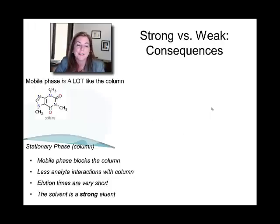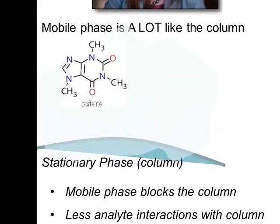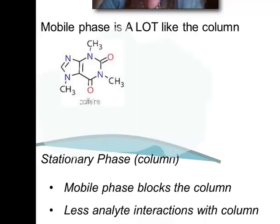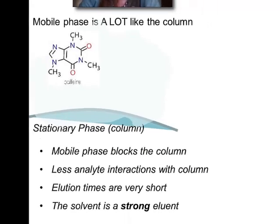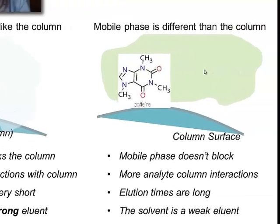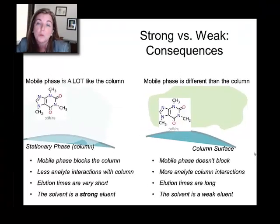Over here on the left is a case where the mobile phase is a lot like the column. So if you have a nonpolar column, that might mean acetonitrile — something really nonpolar. That caffeine molecule really has a bunch of this mobile phase in the way, and it's not going to see the stationary phase. There's less analyte interaction with the column and short elution times. This is an example of a strong eluent — it's highly interactive with the column and blocks the analytes from seeing it. Conversely, a weak mobile phase doesn't interact much with the column and allows analyte-stationary phase interactions to play a big role, meaning long elution times.